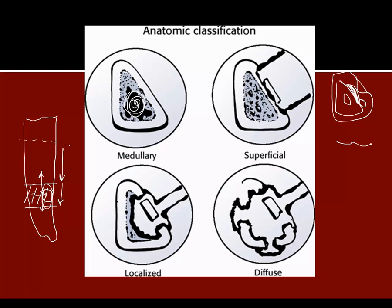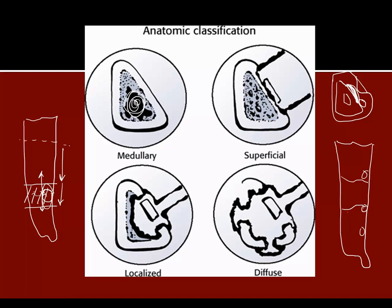A diffuse infection, as opposed to a localized one, involves multiple areas of the tibia — the bone is disrupted at multiple levels due to infection, more moth-eaten and more diffuse. Treatment is extremely challenging because to effectively treat it you would by definition have to destabilize the tibia. With a localized infection you may not have to. With diffuse infection you're going to have to aggressively remove bone and destabilize the tibia in order to treat it.